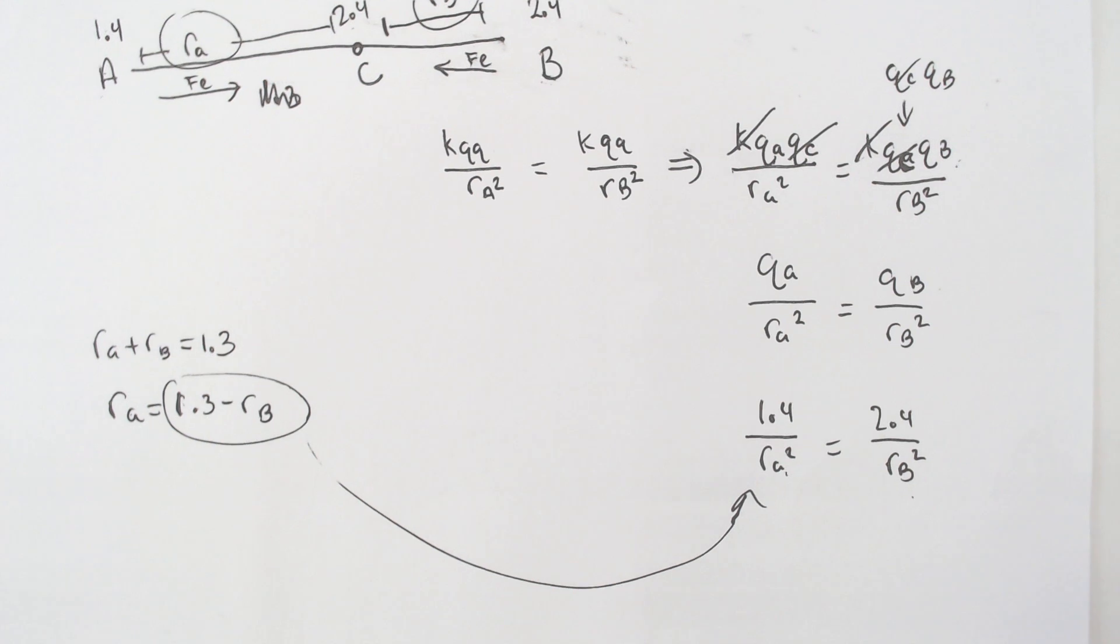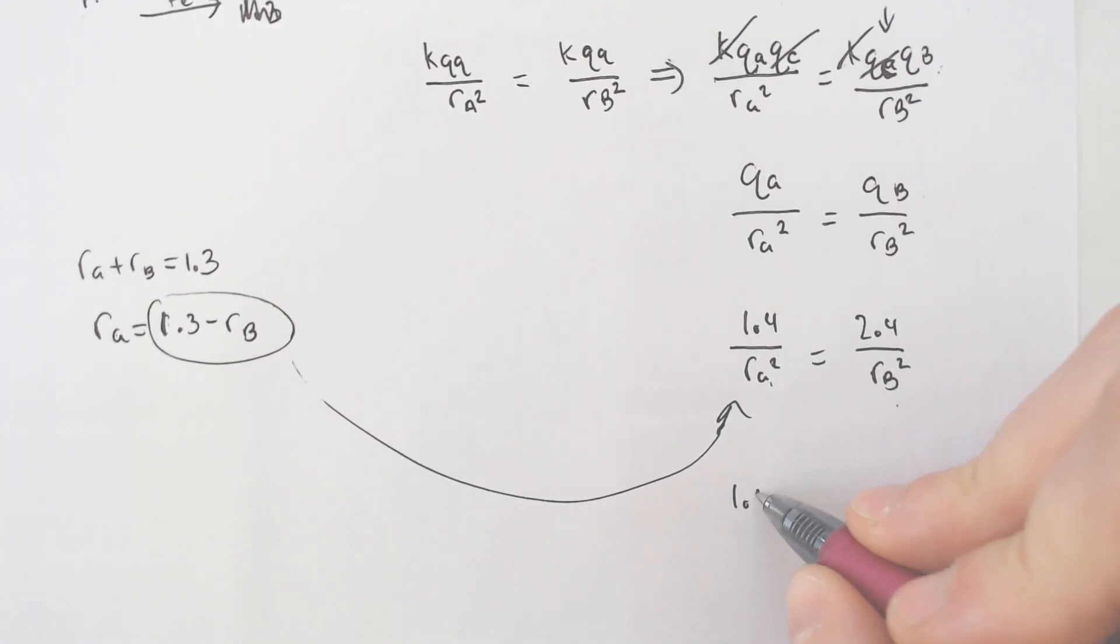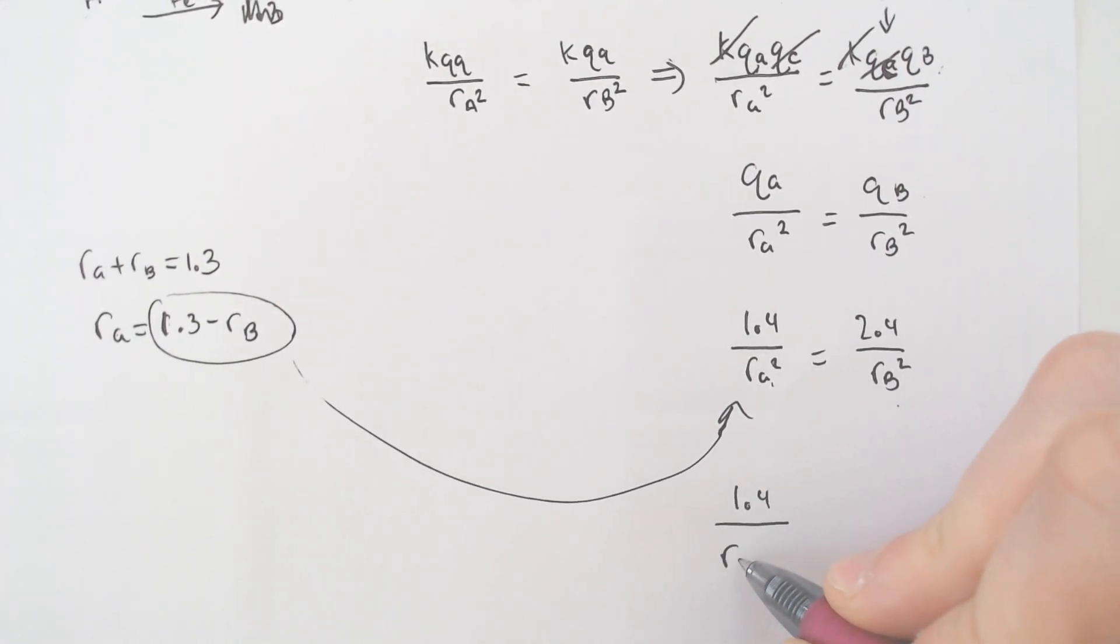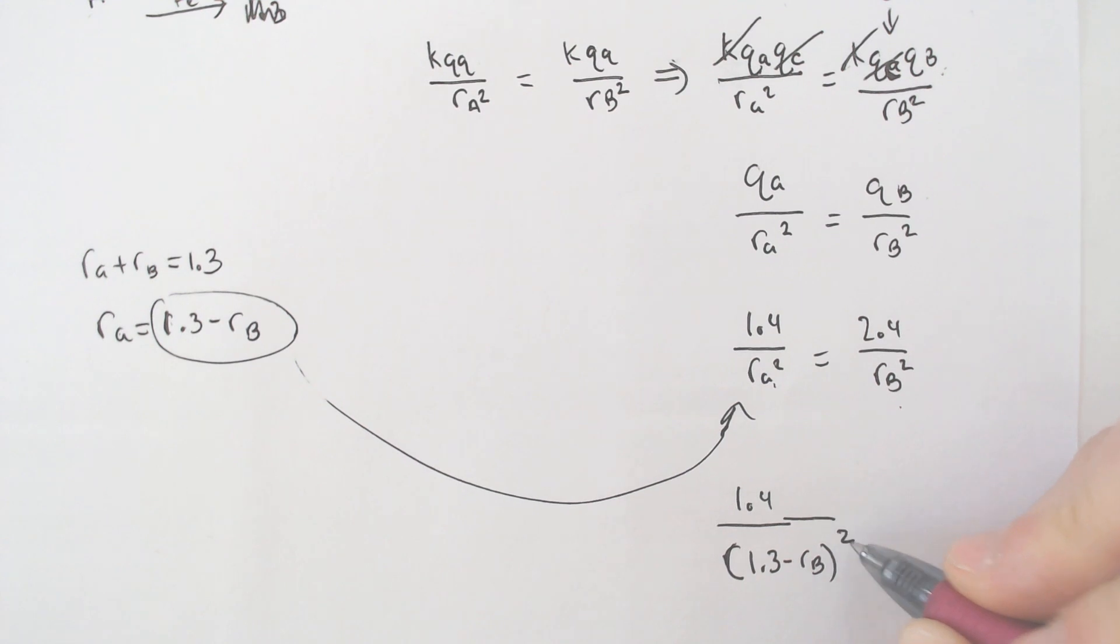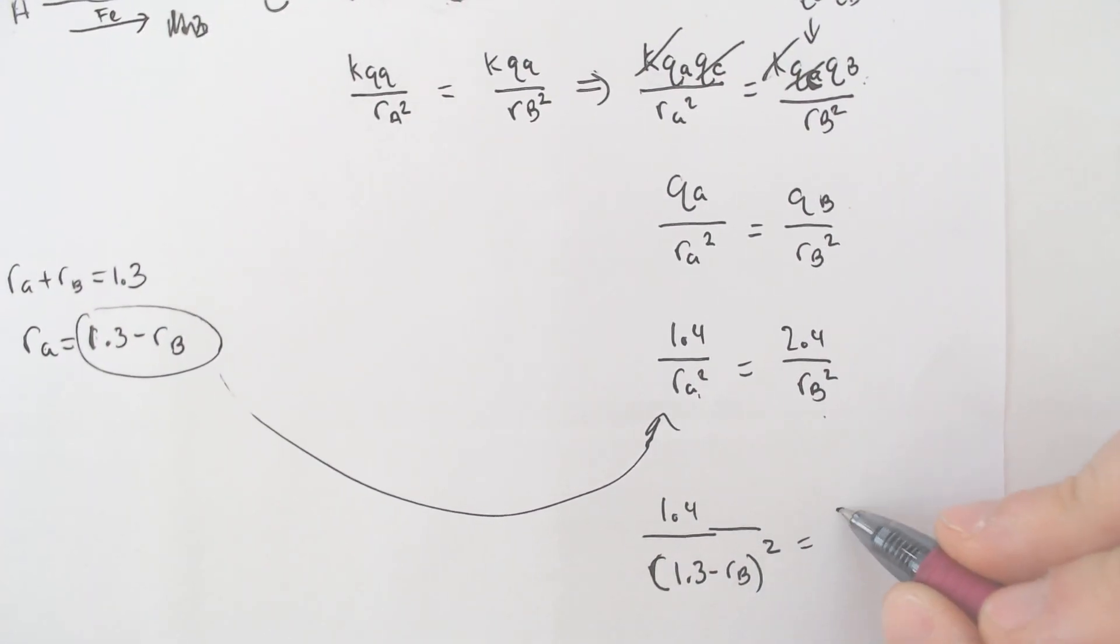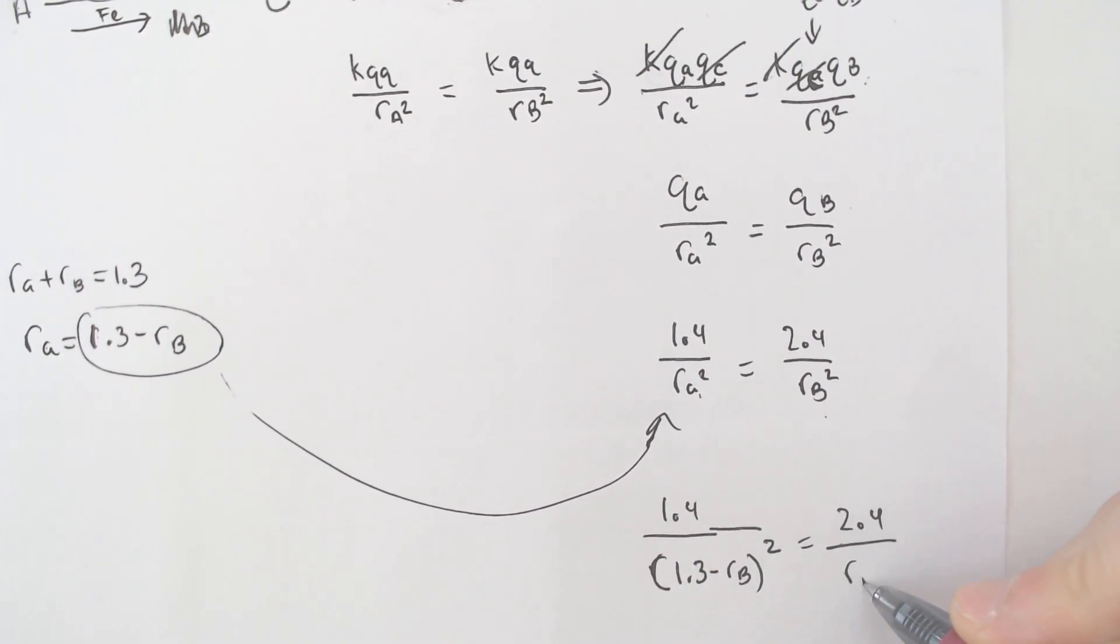We're going to be left with 1.4 over radius of A is being replaced with 1.3 minus radius of B, what we just solved for. Don't forget the squared. Would equal 2.4 over the radius of B squared.